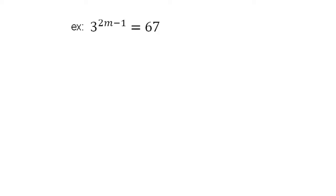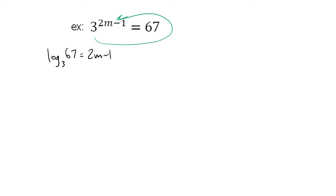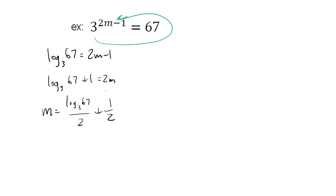So here I have 3 to the power of 2m minus 1 equals 67. I could absolutely do the loop trick here and say that this is just log base 3 of 67 equals 2m minus 1. Then I can solve for m: log base 3 of 67 plus 1 equals 2m, divide everything by 2, so m equals log base 3 of 67 divided by 2 plus 1 half.